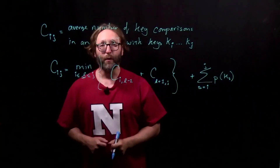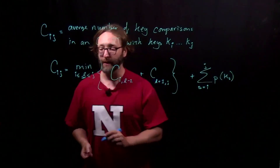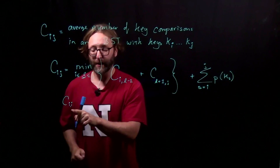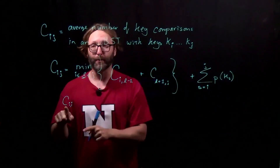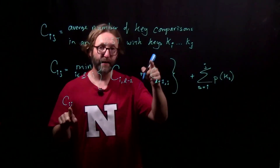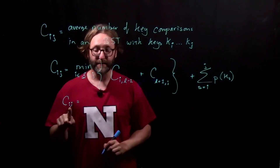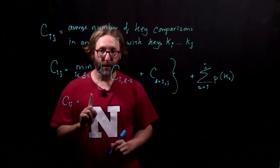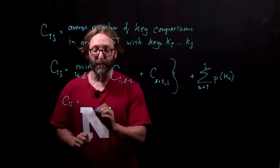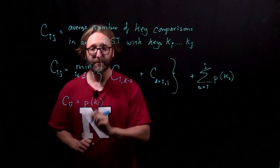Now we need to think of a few base cases. In particular, what is the cost of a single node tree? The interpretation is that this is the cost of the average number of key comparisons in an optimal binary search tree containing keys ki through ki — in other words, one key. A single node tree only costs us one comparison, and to weight it we multiply by the probability, so it's simply the probability of searching for that key.